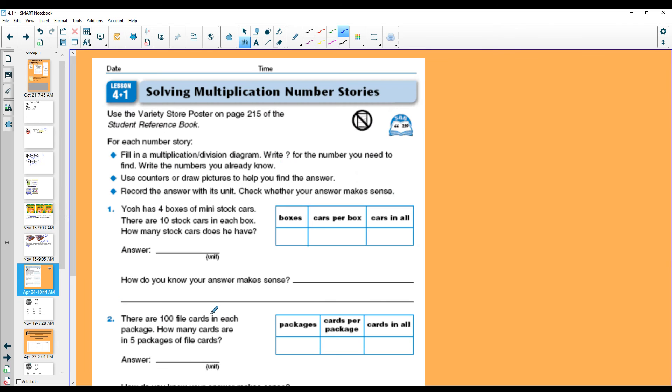Let's look at our journal page today. Make sure when you're solving journal pages that you highlight the important parts of the question. Yosh has four boxes of mini stock cars. There are ten stock cars in each box. How many cars does he have? Well, let's switch back to our pen. And right here, he had four boxes. Cars per box. So how many were in each box? Ten. Now we're looking for cars in all.